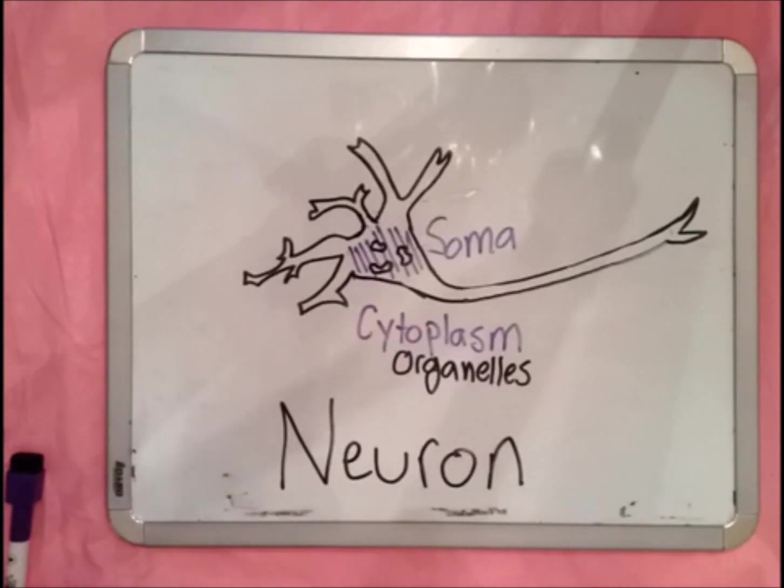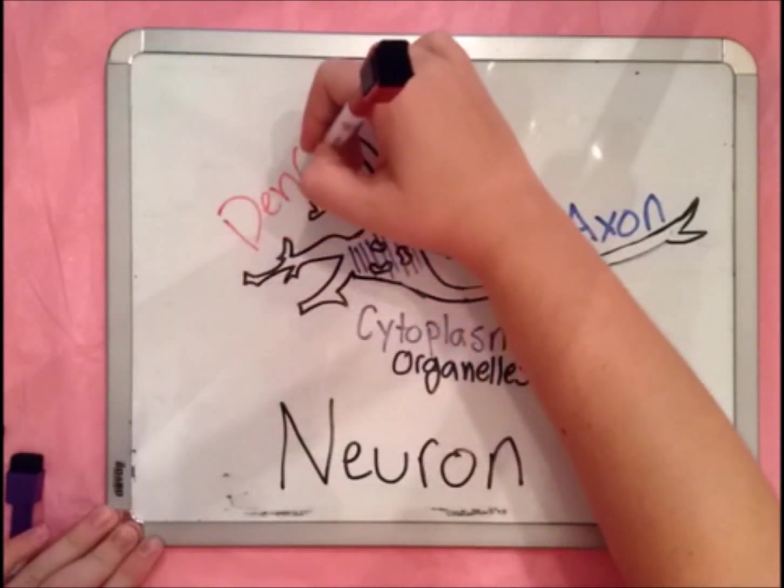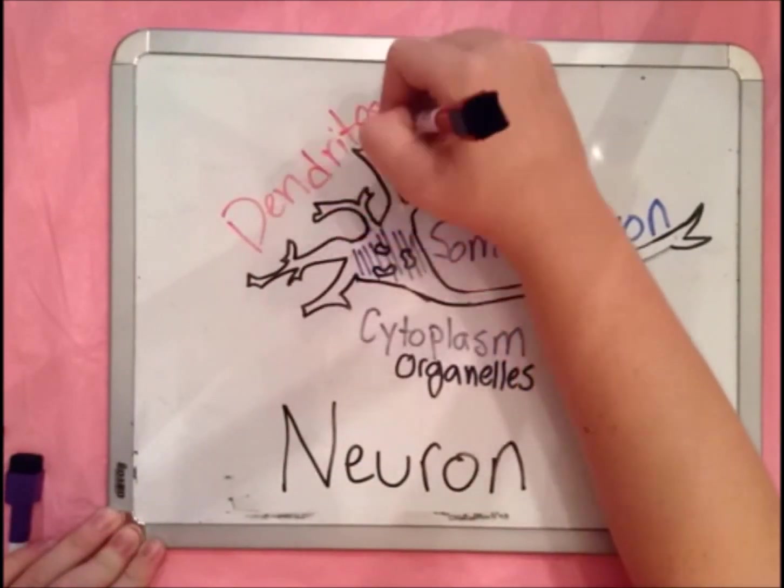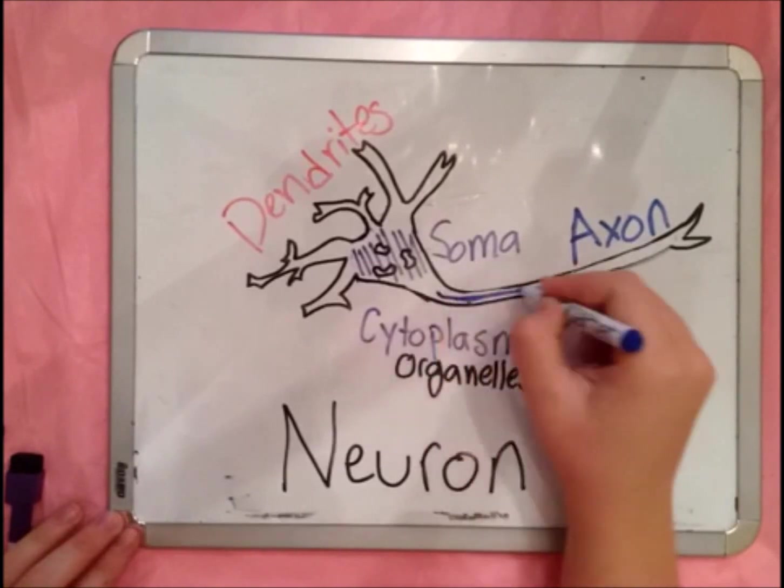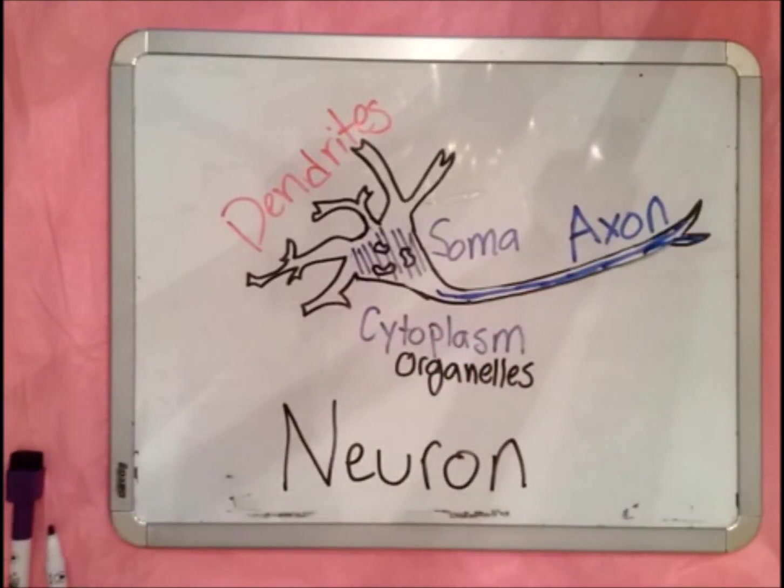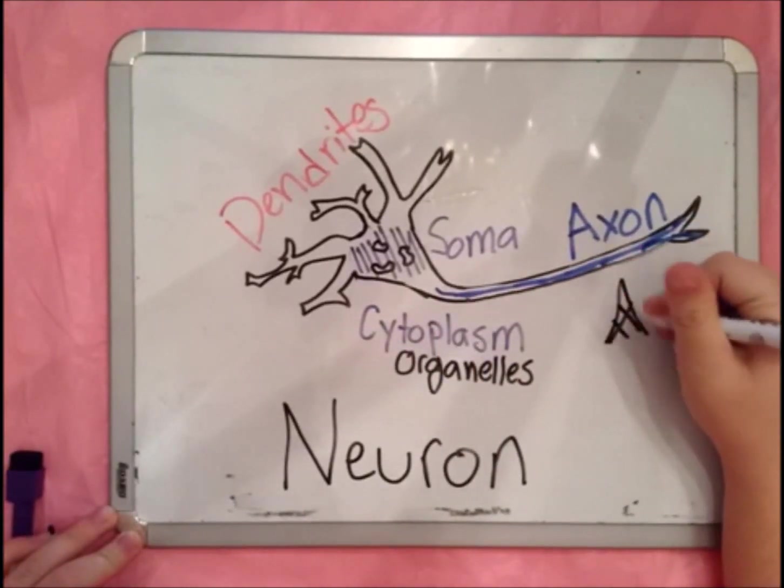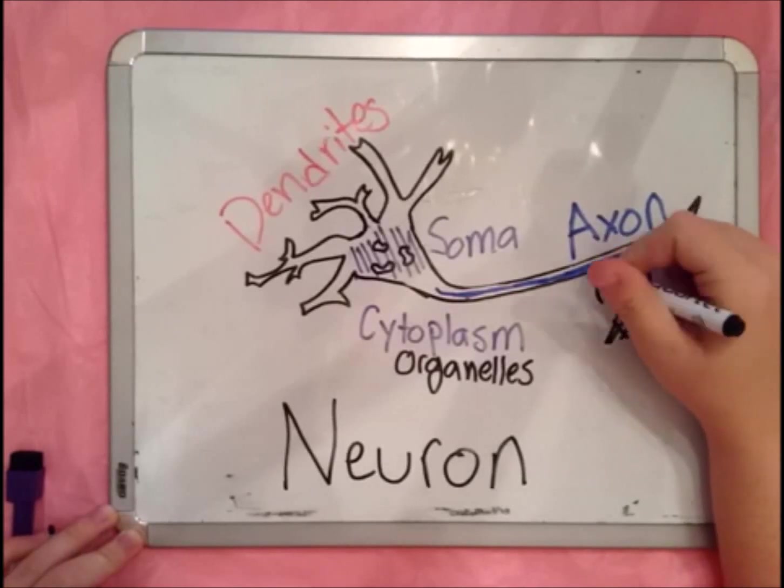Aside from the soma, the two other main parts of the cell are the axon and the dendrites. These are how neurons communicate with each other and with other cells in the body, such as muscle cells. The axon is often quite long and stretches far from the soma. It sends electrical signals from the neuron to other cells, like a cell tower.